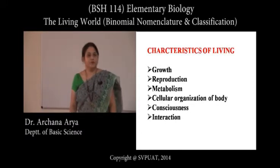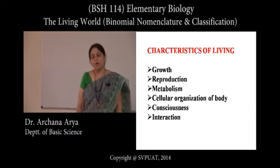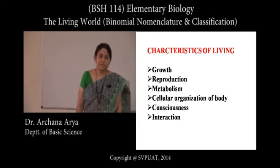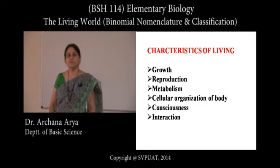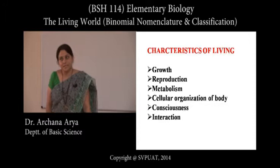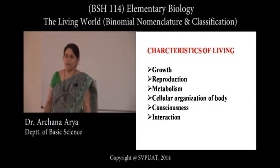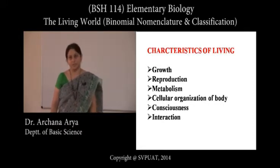What are these properties? The first and foremost is they are all made of cells — that is, they are cellular in nature. They can be unicellular; uni means one and cellular means made of cells. They may be unicellular like amoeba and paramecium, or they may be multicellular like all of us, plants, trees, etc. So they are made of cells — the cell is the first unit.